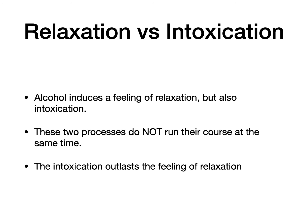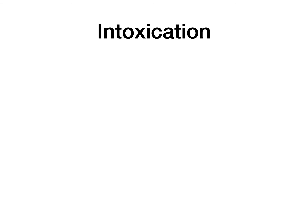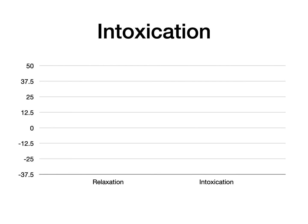The last topic we're going to touch on is intoxication and why it's so easy to end up intoxicated when you drink. When people drink, alcohol induces a feeling of relaxation, but it also induces a feeling of intoxication. People have always assumed it's just one process and part and parcel of the same thing, but the two parts do not run their course at the same time — the intoxication outlasts the feeling of relaxation. I think it's helpful to highlight this with a graph. On the left we've got the feeling of relaxation, and on the right we've got the intoxication, with zero in the middle. So when you take an alcoholic drink, you become a small bit relaxed and a small bit intoxicated. The relaxation wears off quite quickly, and as it wears off, it leaves an unpleasant, anxious feeling.